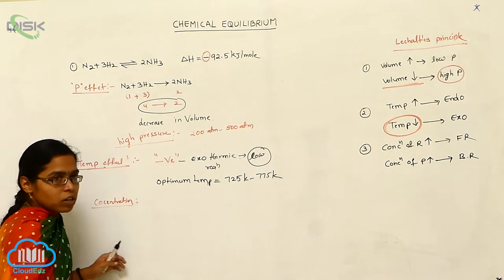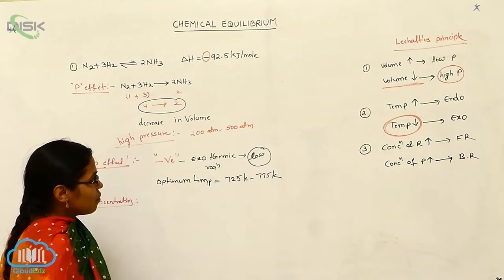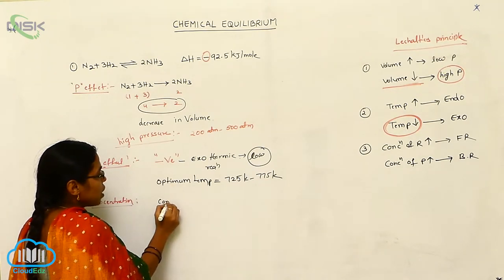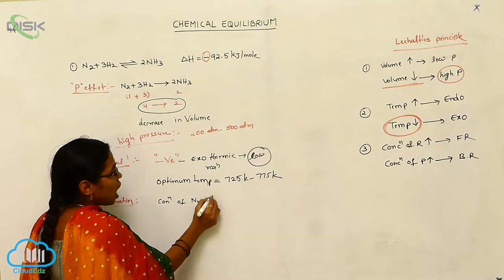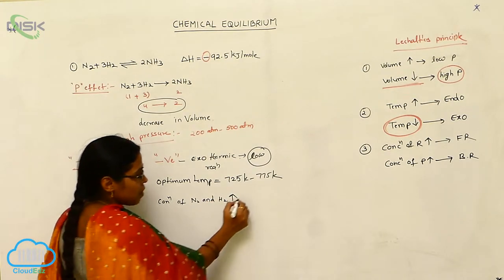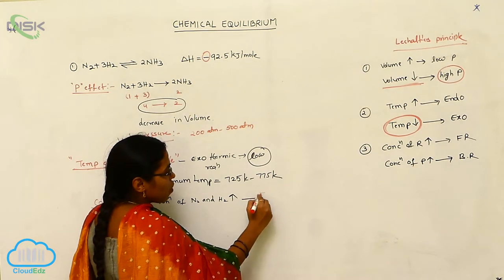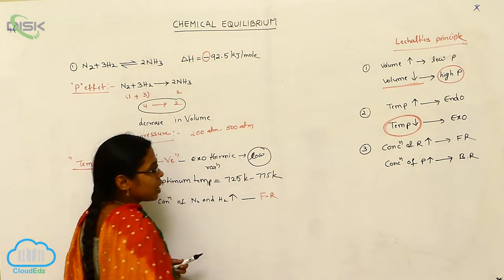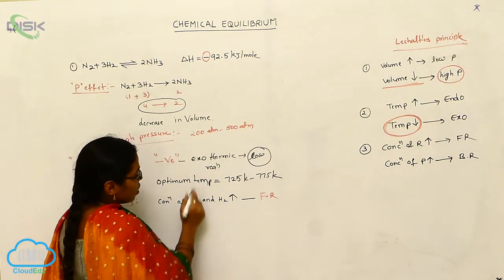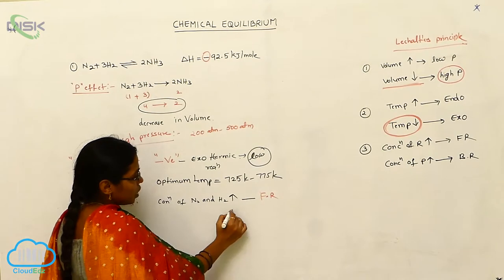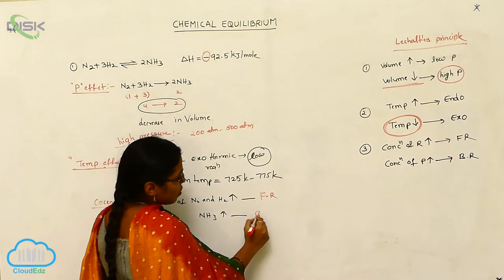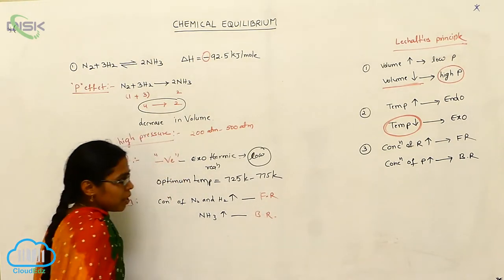Effect of concentration: whenever the concentration of N2 and hydrogen increases, the forward reaction takes place. If the concentration of products — NH3 — increases, the backward reaction takes place.